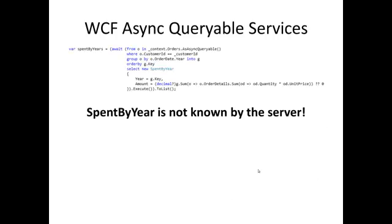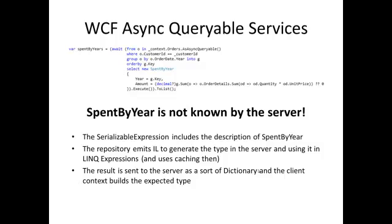Now the question is, how to deal with types not known by the server? If the LINQ query uses a type that is not known by the server, the serializable expression includes the type description. In this case, the serializable expression includes the fact that the SpendByYear type has two properties: year of type int and amount of type nullable decimal. Then the repository emits IL to generate the type on the server and be able to use it in the LINQ query. After executing it, the repository sends the result to the client context using a sort of dictionary where the key is a property name and the value is a property value. Then the client context uses it to fill a new instance of the expected type.